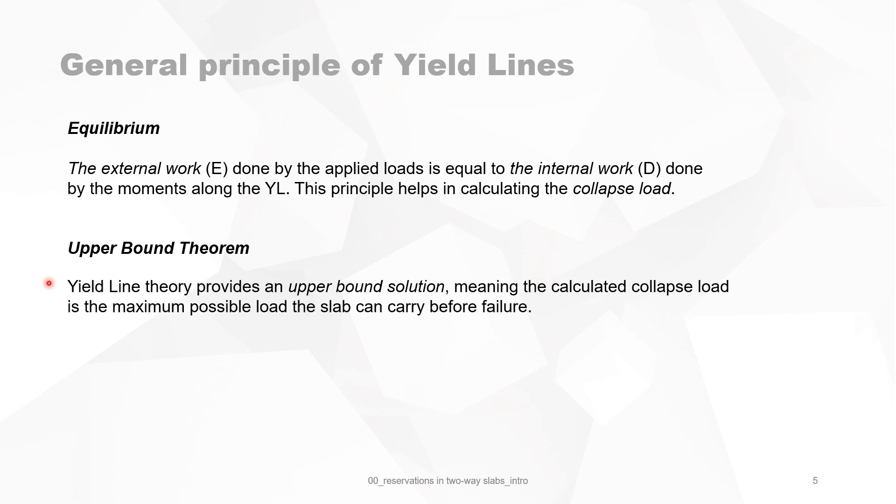This is an upper bound theorem. It means that this yield line theory provides an upper bound solution, meaning the calculated collapse load is the maximum possible load the slab can carry before failure.